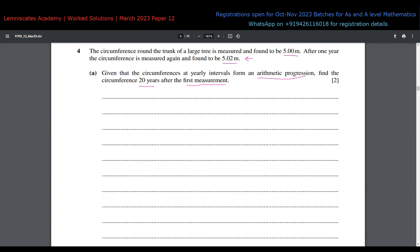First of all, because it's an arithmetic progression, we need to find the common difference. Your common difference is the difference of consecutive terms, so it's 5.02 minus 5, which equals 0.02 meters.